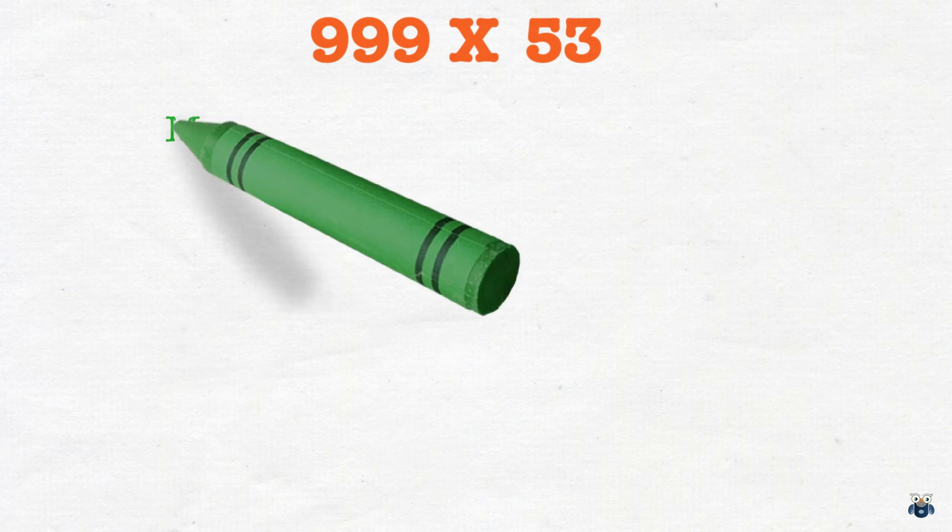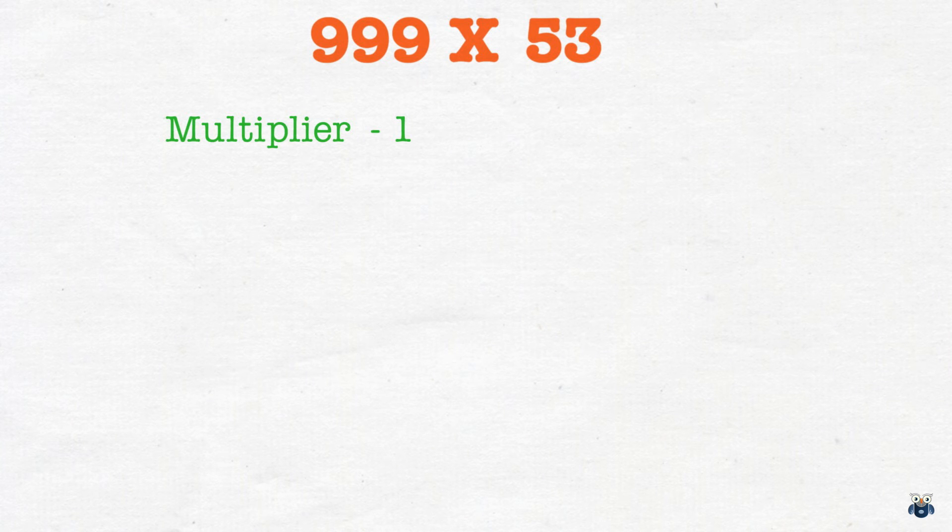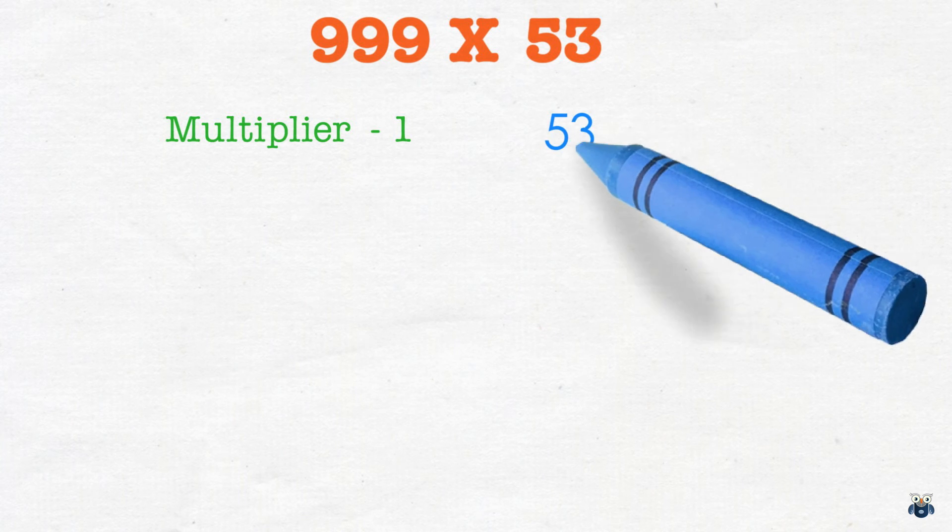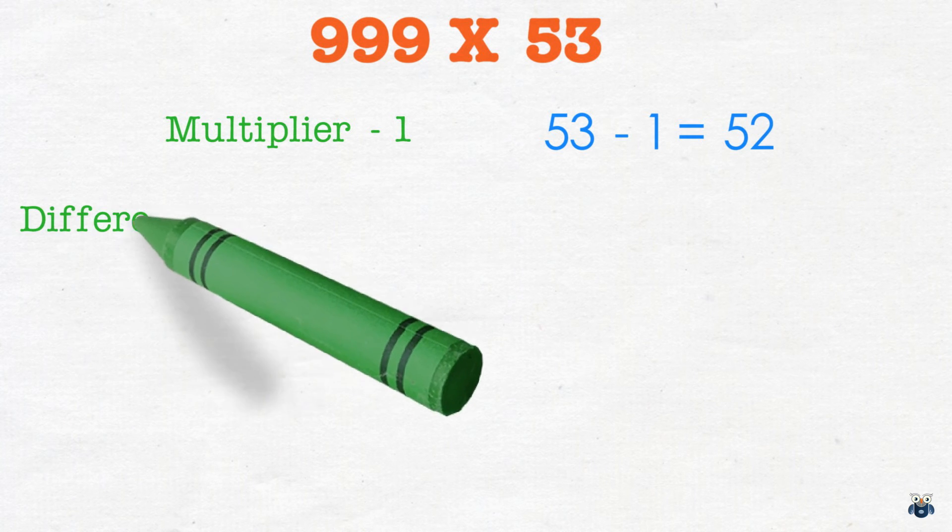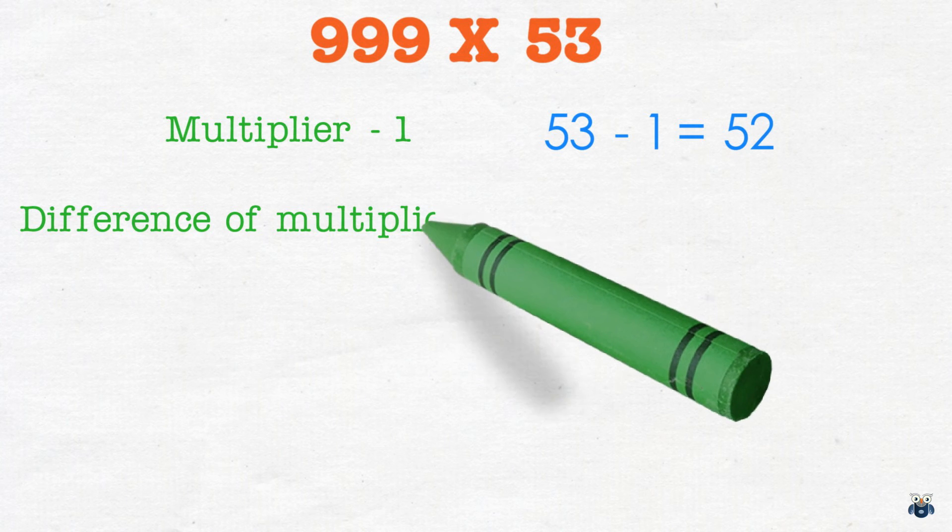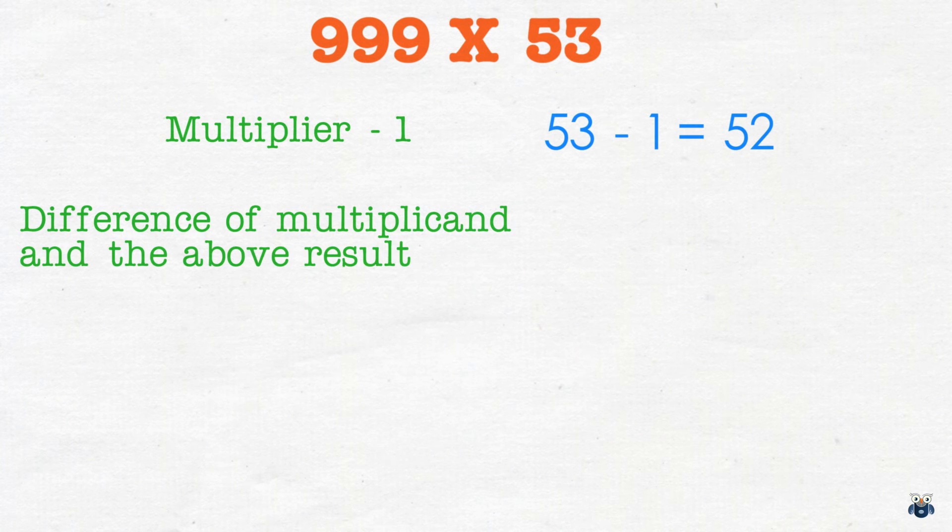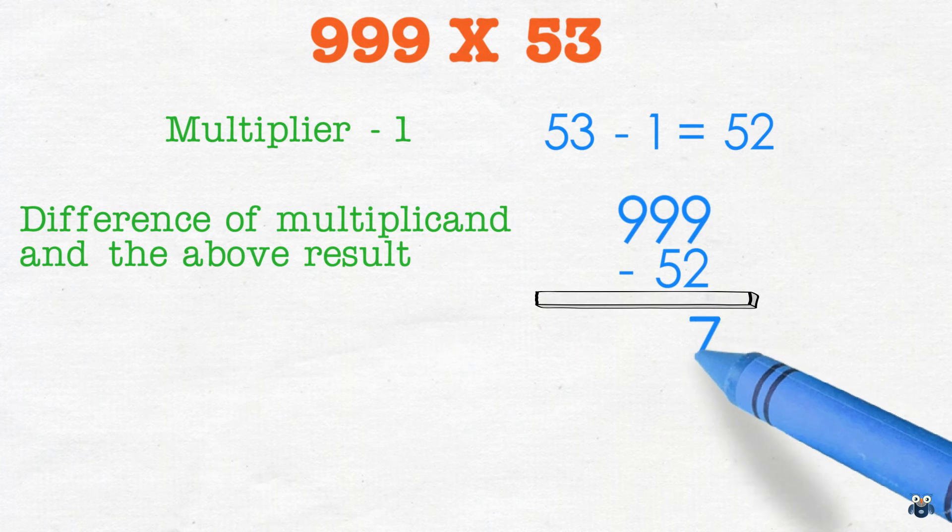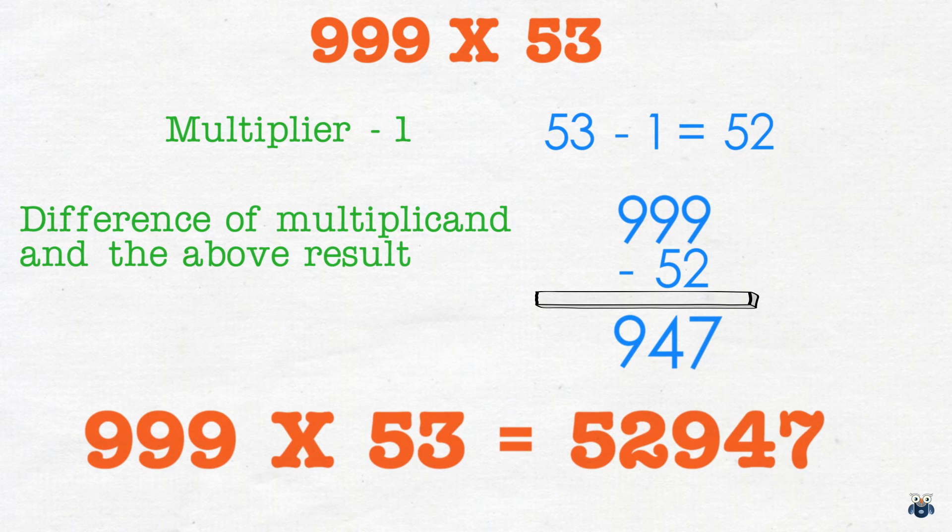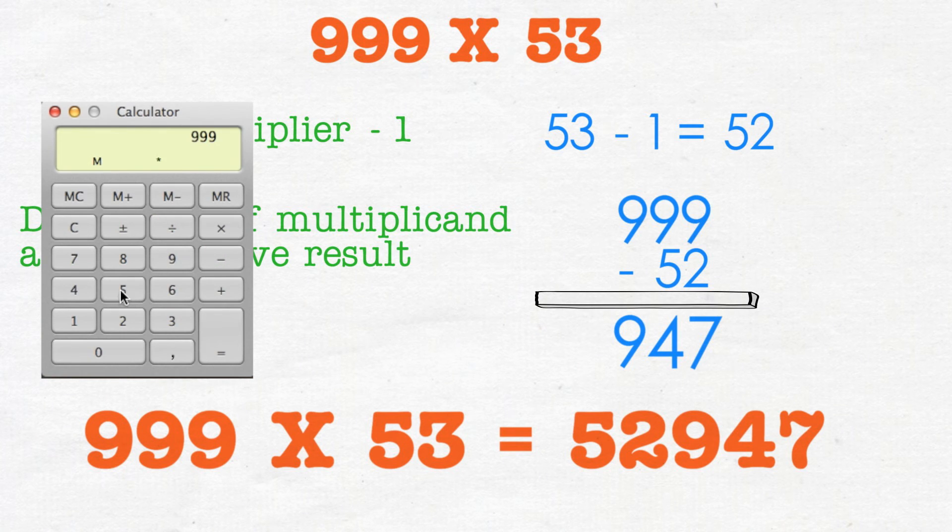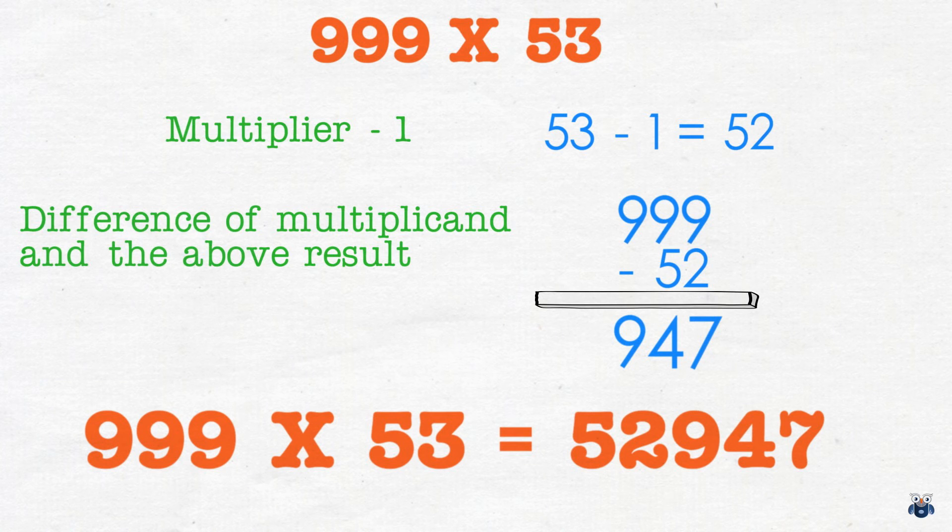Now let's apply our pattern to this problem. For the first part of the result we reduce the multiplier by 1. The result is 53 minus 1 which is 52. The second part is the difference of the multiplicand and the above result. 999 minus 52 is 947. And putting these two results together we get our final answer which is 52,947. Let's check our result. Yes, it is the correct answer.